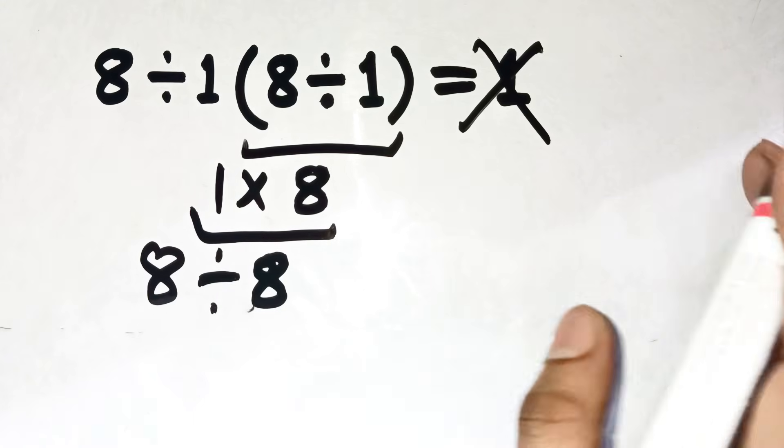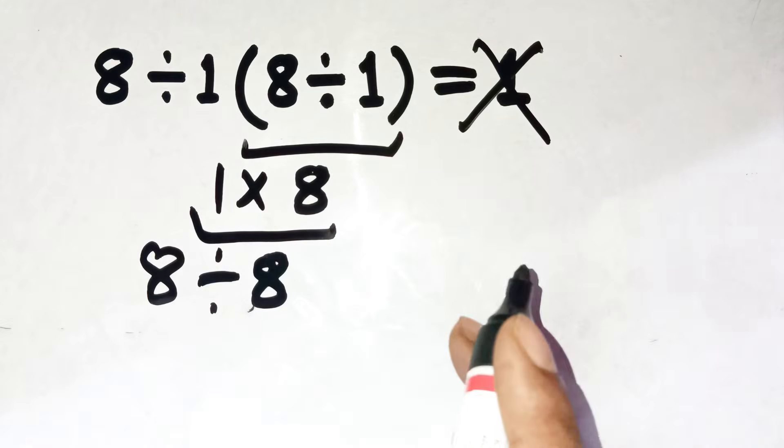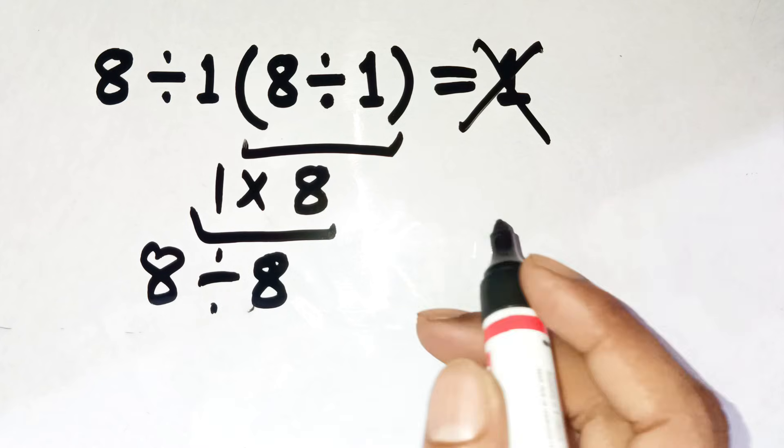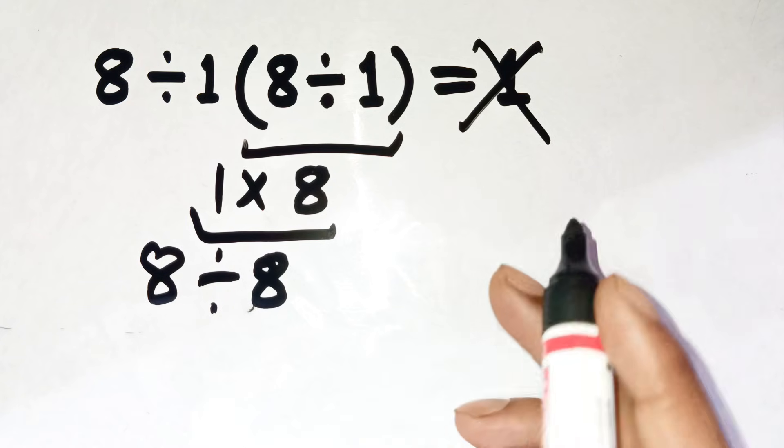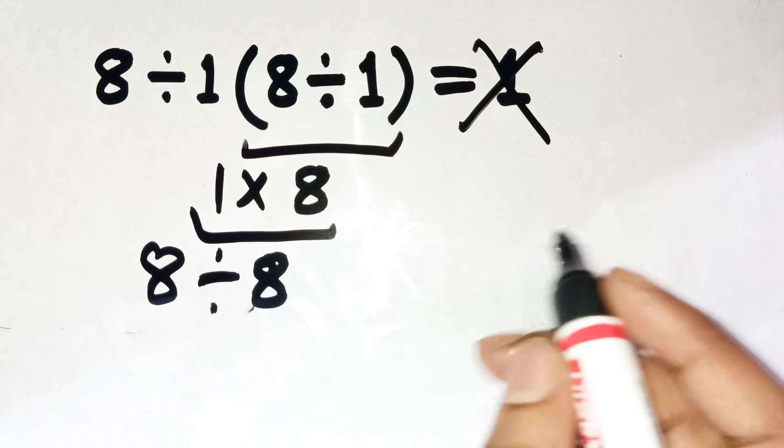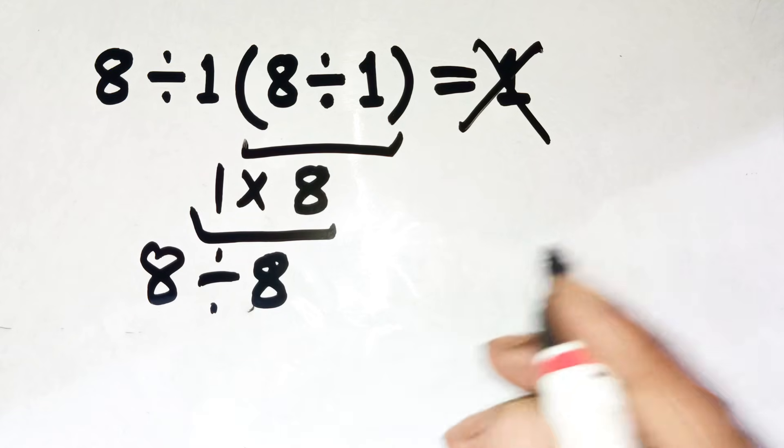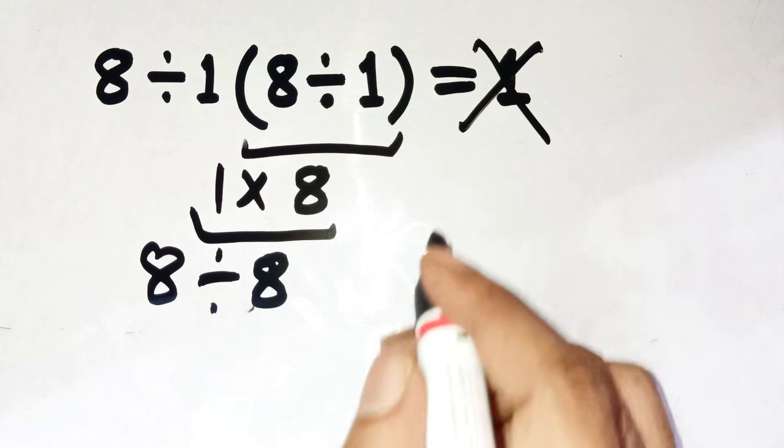And honestly, I get it. It feels right. It looks clean. It's the kind of speed math your brain does when it thinks the problem is too simple to be dangerous. But that one-step logic is exactly why this expression traps people.